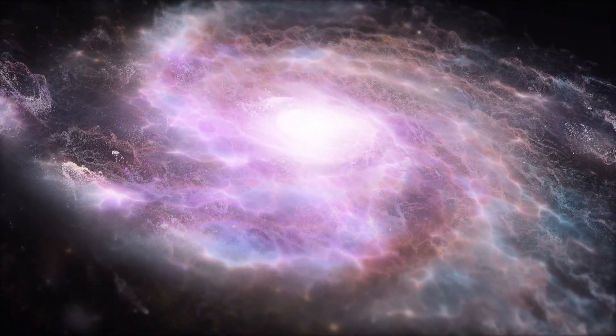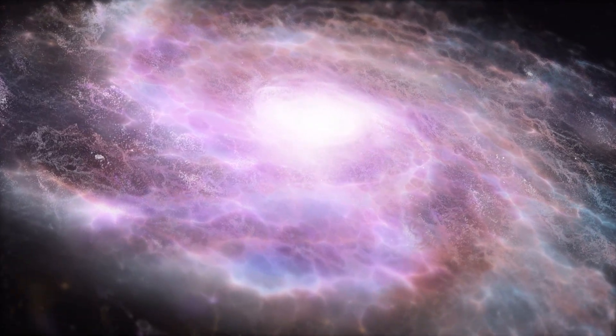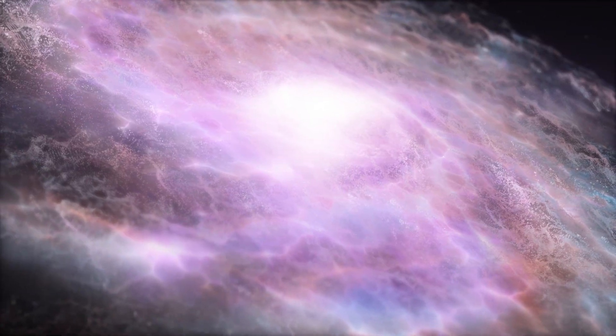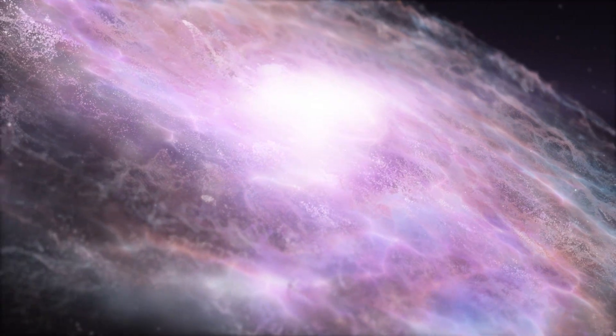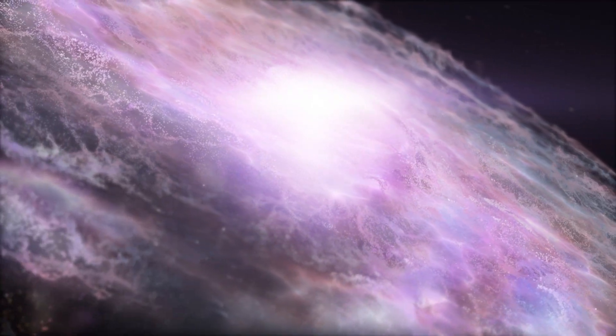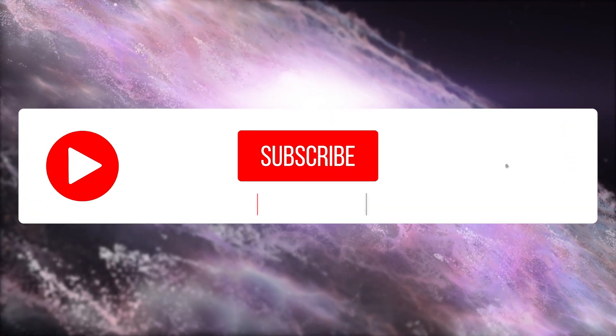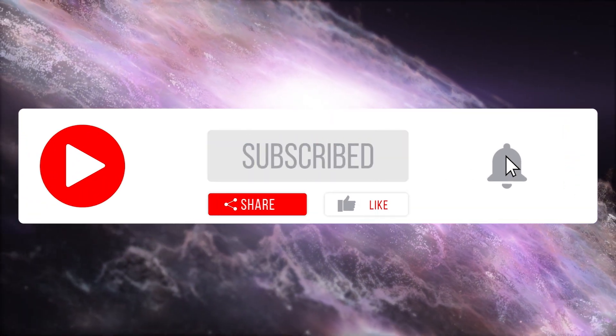The bottom line is that all large galaxies have a central supermassive black hole, and their evolution and structure are closely tied to the scale of their central black hole. However, there's still nothing conclusive as to why they end up at the centers of galaxies.